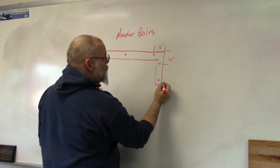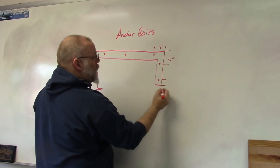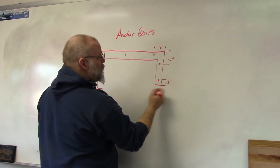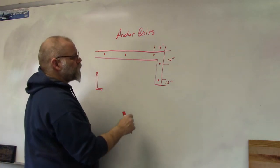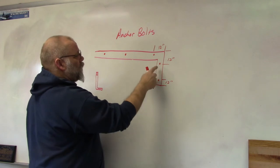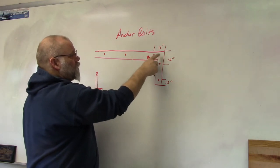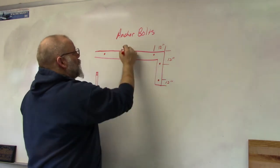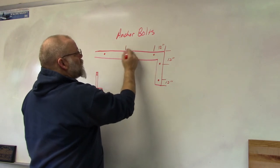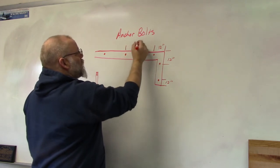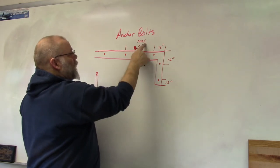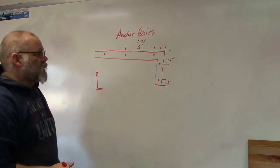You have to have one within 12 inches of the end of a wall. So 12 inches from the end of the wall, 12 inches in either direction of a corner, and the maximum distance from one anchor bolt to the other anchor bolt is six feet. So the max is six feet.